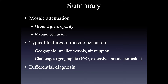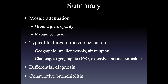When mosaic perfusion is associated with other findings, focus on those other findings for the differential. When seen in isolation, the main differential diagnosis is asthma, constrictive bronchiolitis, hypersensitivity pneumonitis, and vascular diseases such as chronic thromboembolic disease. Remember constrictive bronchiolitis — it is one of the most common causes of mosaic perfusion, has a variety of different causes, and presents across a very large spectrum of appearances.